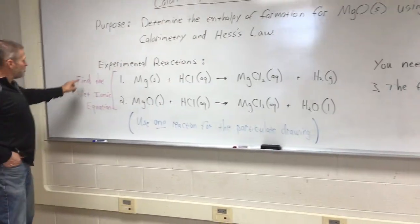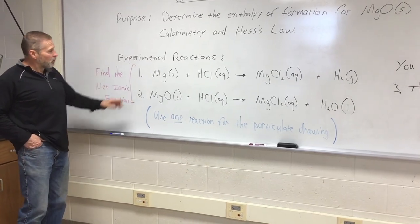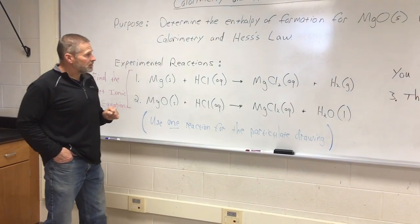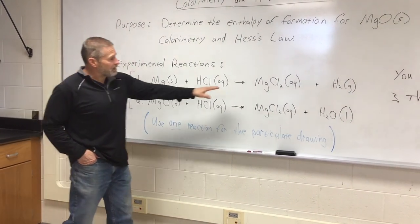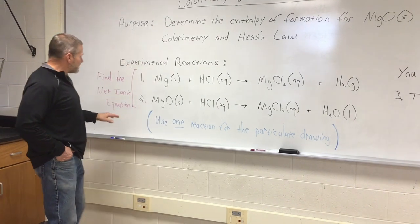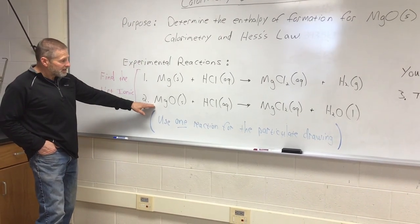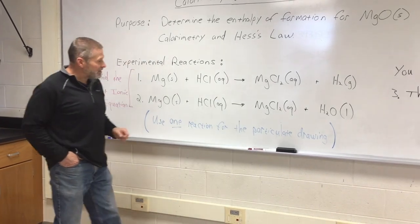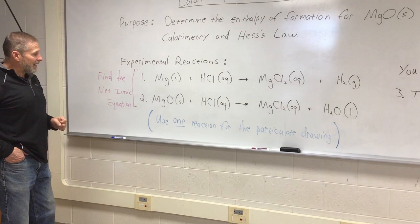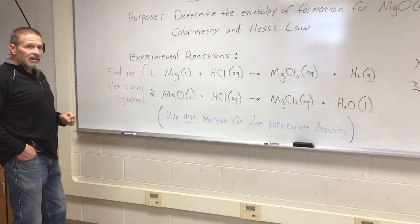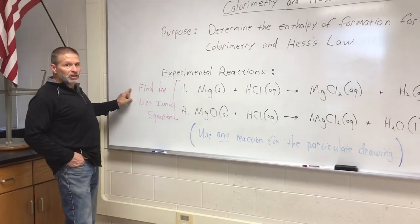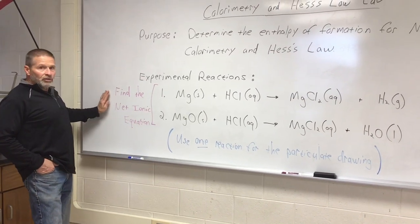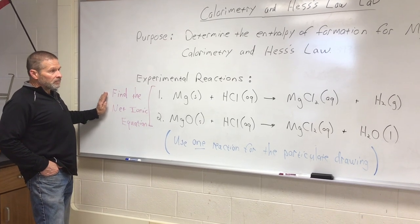So, here are our two reactions. Here's what we're mixing together. One reaction is solid magnesium metal with hydrochloric acid. It's going to react and make magnesium chloride and hydrogen gas. Our other reaction is solid magnesium oxide, again reacting with HCl. Again, makes MgCl2, but water in that case. Now, you're going to have to figure out the net ionic equation. We gave you the molecular equation. You'll need the net ionic.